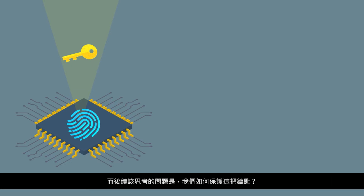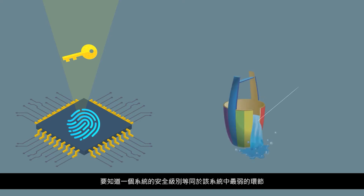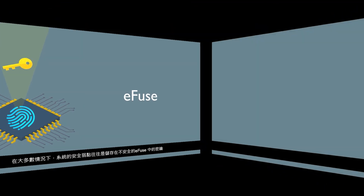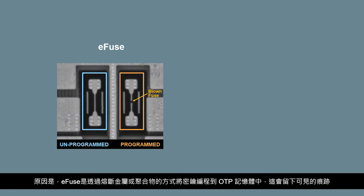But how do we protect this key? We know that security is only as strong as its weakest link, and in most cases the weakest link is insecure key storage and eFuse. The reason is, with eFuse, the key is programmed into OTP memory by blowing a portion of metal or poly, which leaves a visible trace.